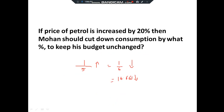Try this by yourself: if the price of petrol is increased by 20%, then Mohan should cut down his consumption by what percentage to keep his budget unchanged? 20% = 1/5, increase, so add: 5+1=6. Decrease — 1/6 = 16.66%. So Mohan should reduce consumption by 16.66%.